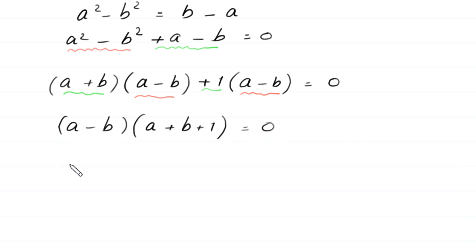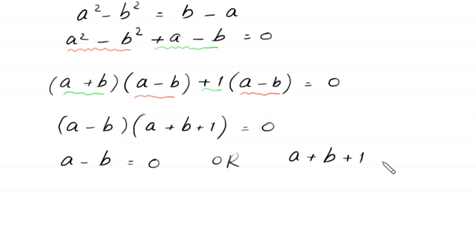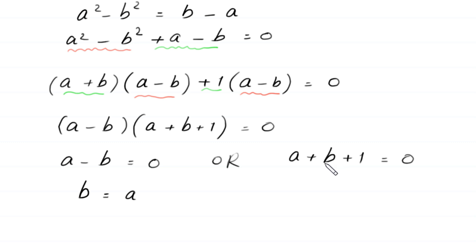From here, either a minus b equals 0, or a plus b plus 1 equals 0. From the first equation, b equals a. From the second equation, making b the subject gives b equals negative a minus 1.